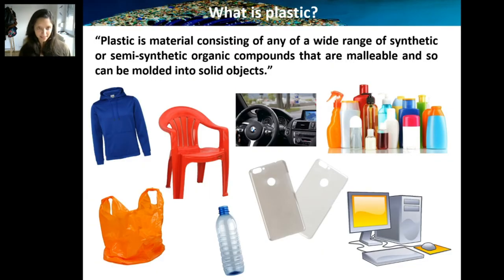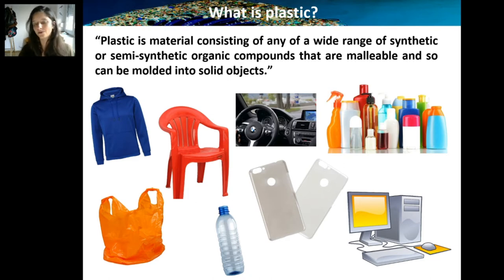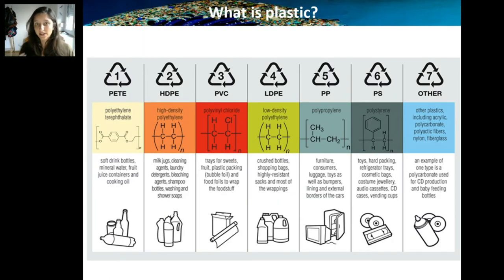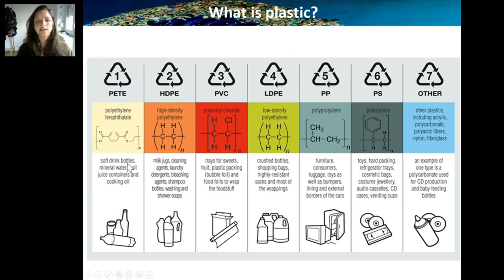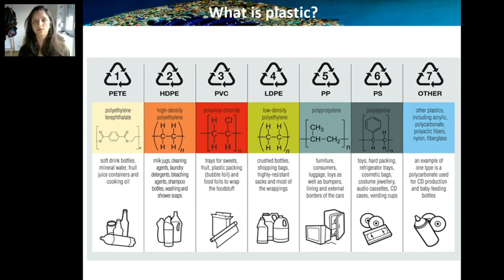First of all, what is plastic? Plastic is pretty much any synthetic or semi-synthetic organic compound that can be molded and shaped into solid objects. Here you see a wide variety of plastics we use in our everyday lives. There are several different types of plastic — you have probably seen these symbols on plastic materials — and this simply means they have different chemical structures, different molecular structures. These are the most common plastics used and produced worldwide, the most common being polypropylene and low density and high density polyethylene.